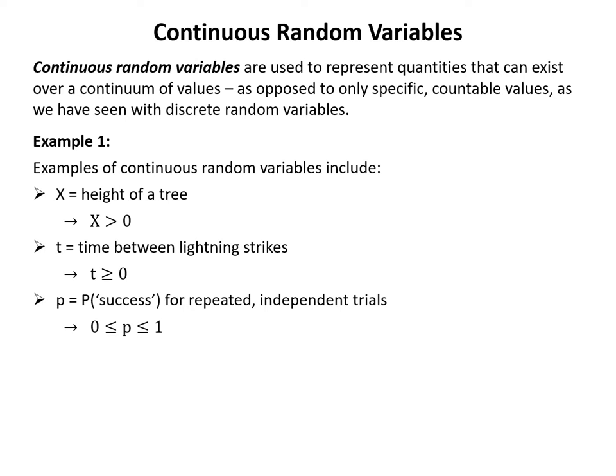Another continuous random variable is the time between lightning strikes. Time elapsed is generally a continuous quantity, so t would be greater than or equal to zero. The difference here is that if two lightning strikes occur at the same time, t would equal exactly zero, unlike the tree height which could never equal zero since a tree with no height doesn't exist.